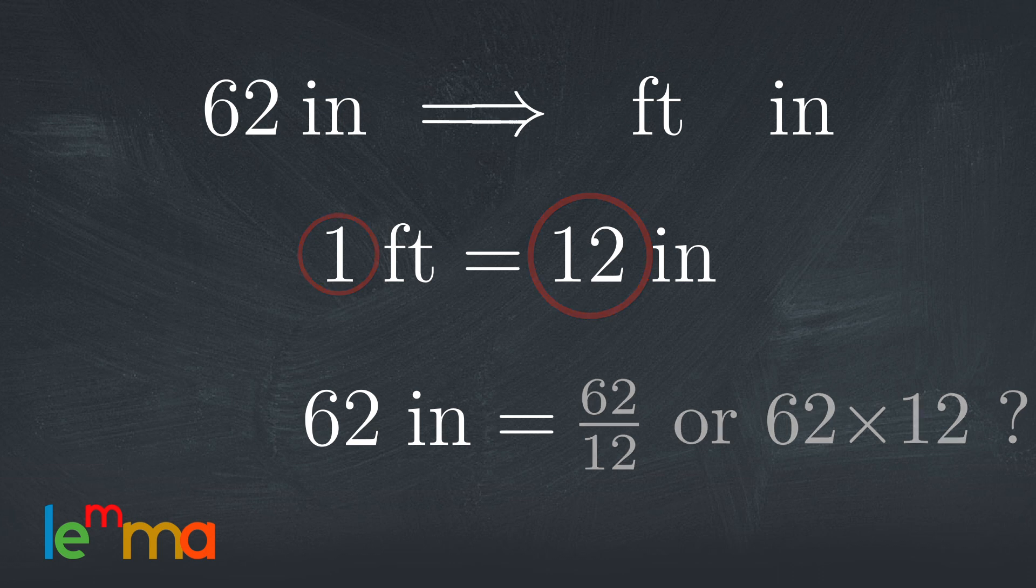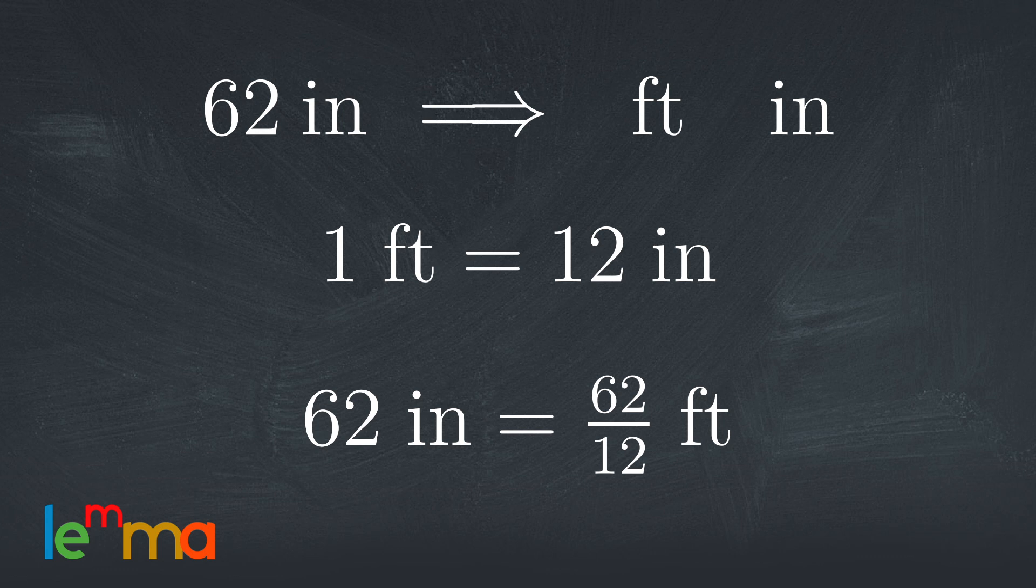62 inches is 62 over 12 feet. That's actually the correct value. 62 inches is 62 over 12 feet. But it's not in the correct form. This form doesn't tell us how many whole feet we have and how many inches.